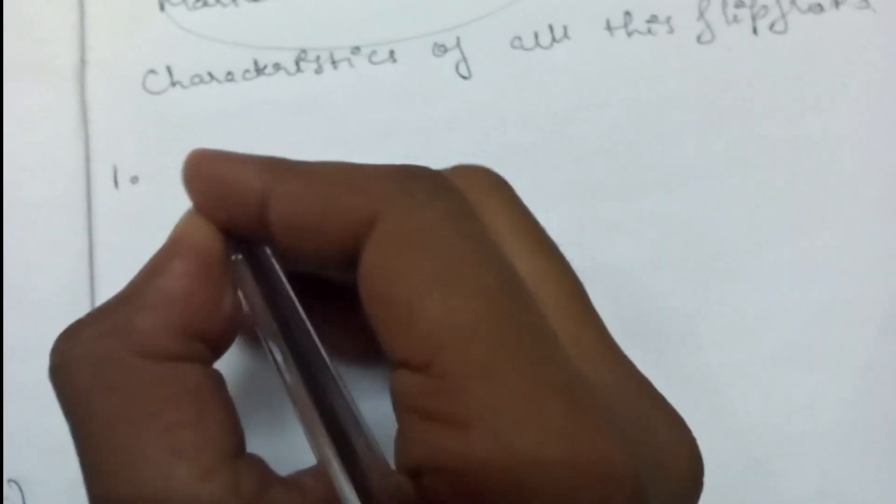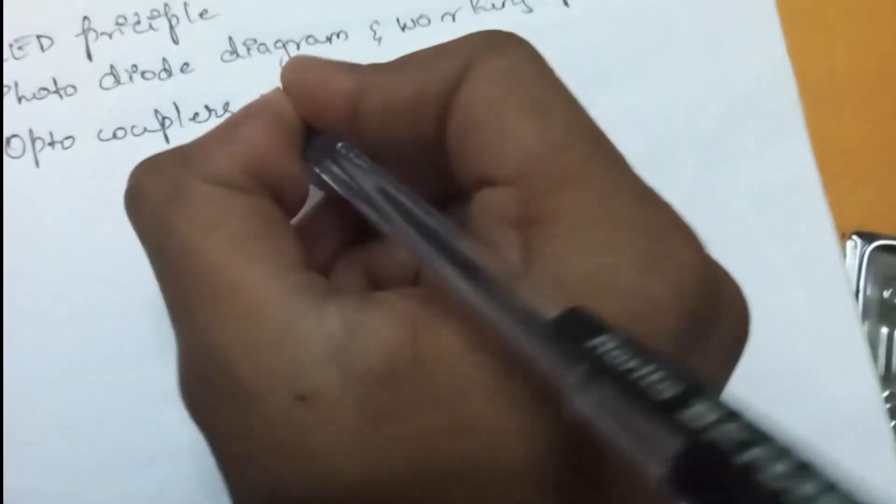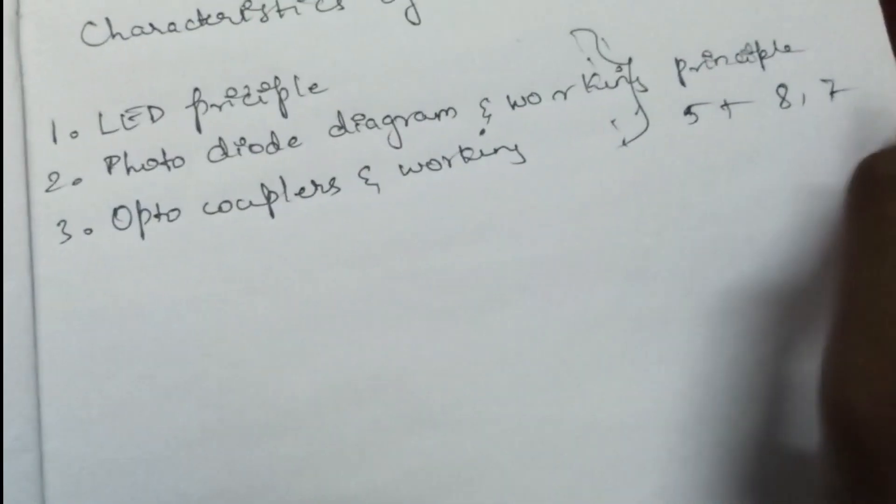Now first module: BJT biasing, LED, and everything. What do you have to study? LED principle and working principle with circuit diagram. Photodiode diagram and working principle. Optocouplers and working principle. Any one among these three, definitely for 5+ marks - it will be 8 or 7 marks, 5+ marks for these three topics.